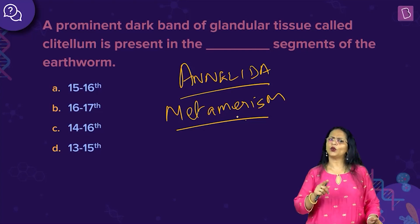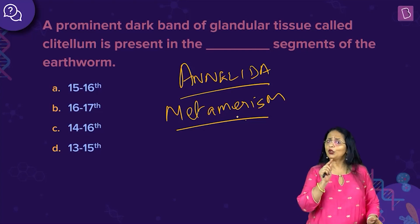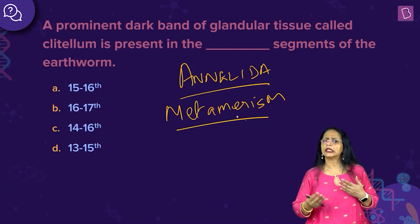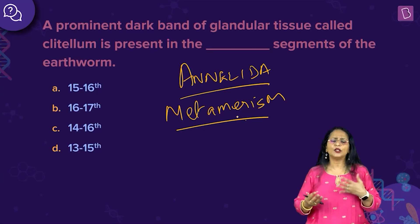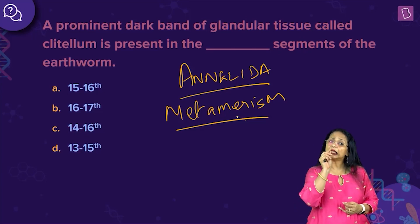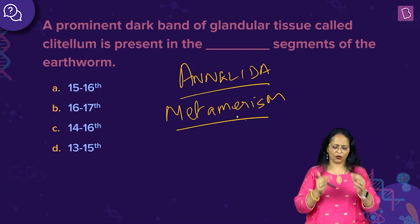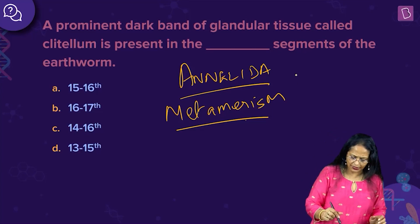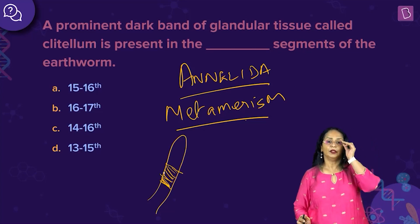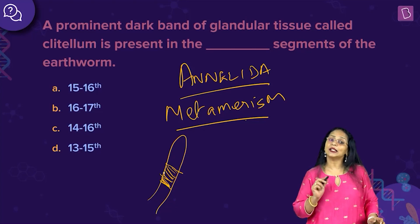Earthworm's body is segmented — all of you would have seen it. You would have noticed that there is a thick band, like a collar. If you look at the earthworm, you will find a kind of thick band that is slightly darker than the rest of the animal's body. This is called the clitellum.